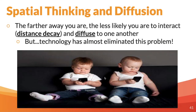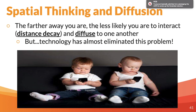We also get into spatial thinking and diffusion in this course quite a bit. Diffusion is a core element of human geography. Here's why: the farther away you are from someone, the less likely you are to interact. This is what we call distance decay. The more distance you have from somebody, the less likely you are to diffuse — meaning spread — ideas to them.